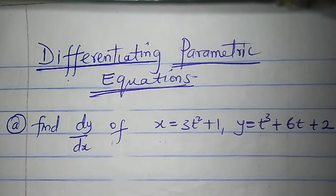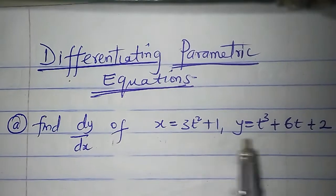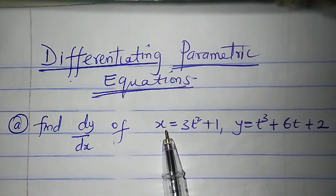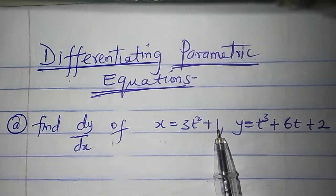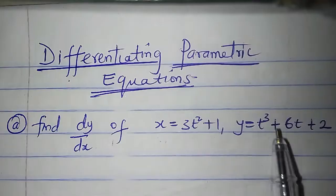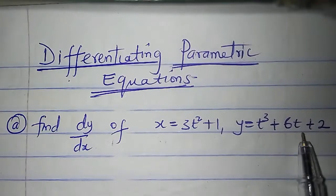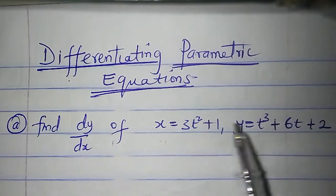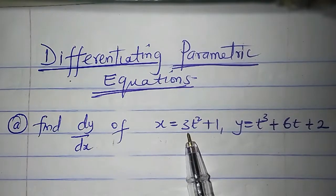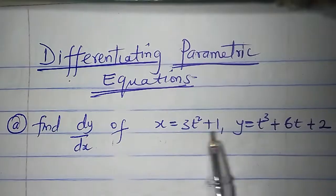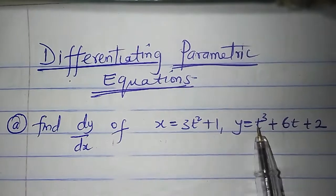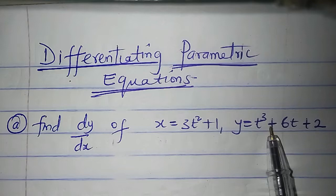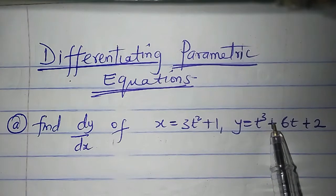This time around, we are going to talk about differentiation of parametric equations. Look at these two equations that I have here: x equals 3t squared plus 1, y equals t cubed plus 6t plus 2. Both x and y are functions of t. We call t the parameter, and we say that these two equations are parametric equations of x and y.